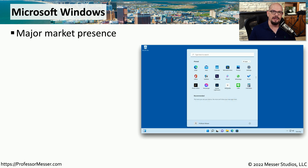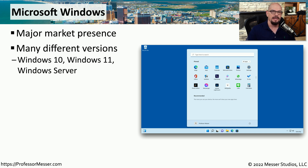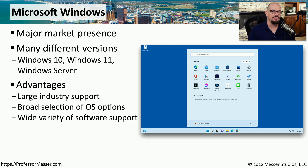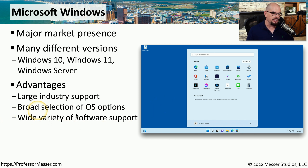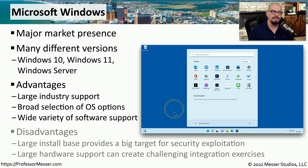One of the most popular operating systems in the world is Microsoft Windows, used across millions of different systems. There are many different versions of Windows available — you could be running Windows 10, Windows 11, or Windows Server. One significant advantage of using Windows is there's so much support in the industry, and it becomes easier to find applications. There are also tools built into Windows that allow us to customize exactly the way Windows will operate.